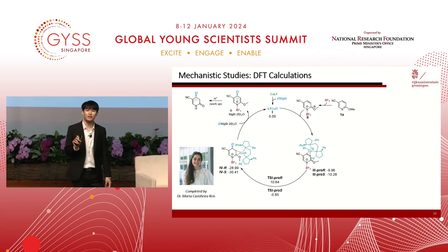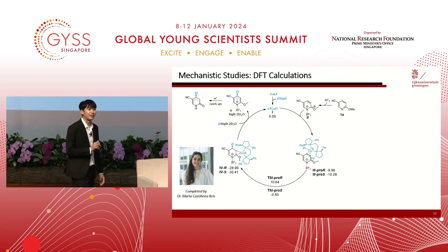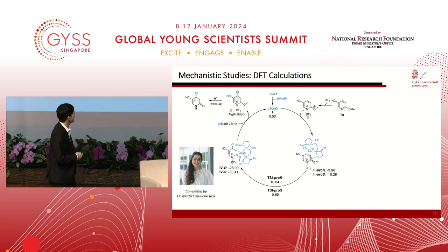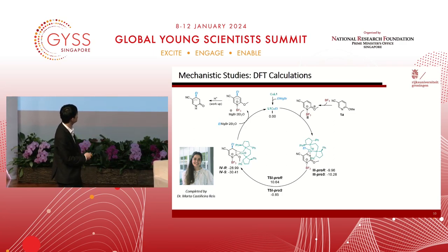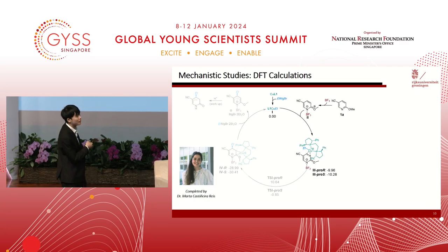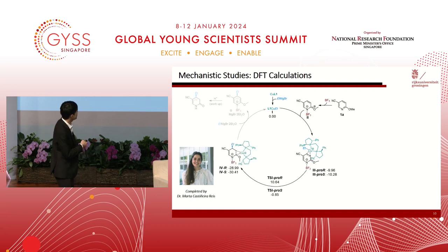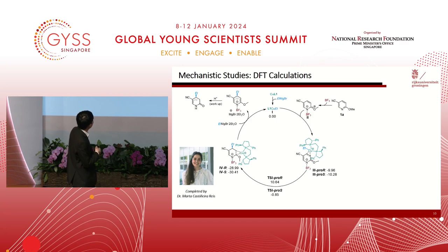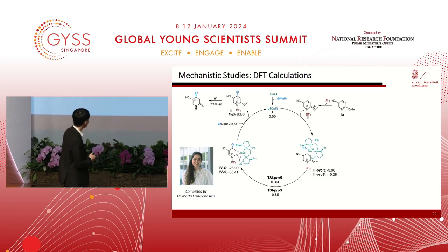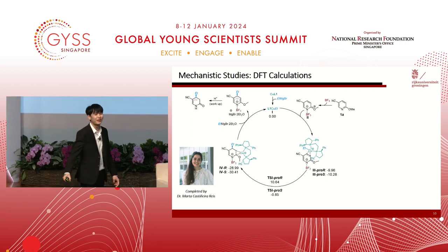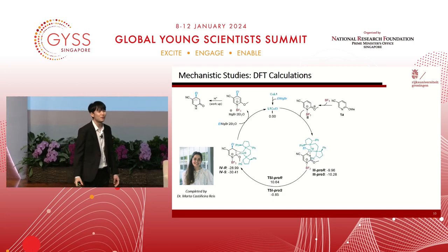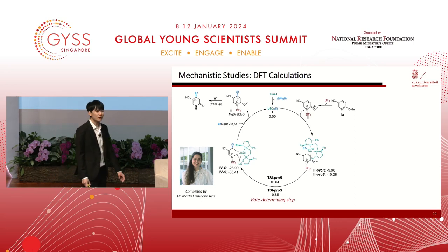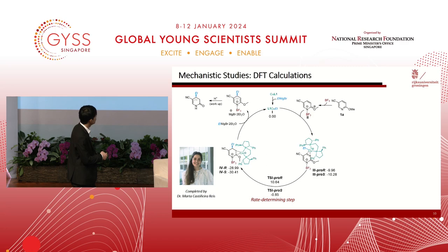Next, we investigated the reaction mechanism using a combination of DFT calculations and 13C kinetic isotope effects (KIE) at natural abundance. Based on computational data, we propose the mechanism follows this catalytic cycle: first, the copper complex reacts with the activated pyridine to form a pi-complex intermediate 3; then the ethyl group is transferred to the C4 position of the pyridine, leading to intermediate 4; after that, the unstable dihydropyridine intermediate is released, recovering the copper catalyst; finally, the unstable dihydropyridine product reacts with acid to obtain the stable delta-lactam product. Computational data suggests that the ethyl group transfer to C4 is the rate-determining step.